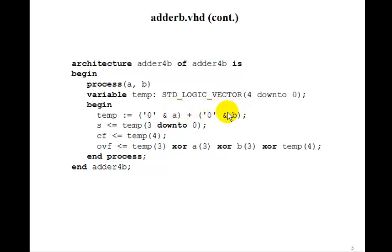And so the temp is just the sum of this, in this case, 2 5-bit numbers. The sum then is just temp 3 down to 0, the lower 4 bits. The carry flag is temp 4.